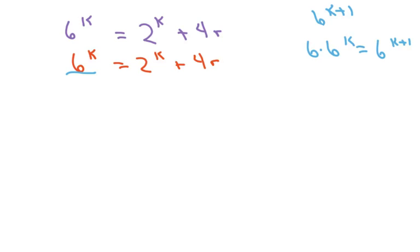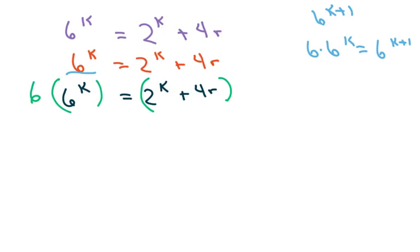So we're going to multiply both sides by 6, but instead of writing 6 on the right side, I'm going to write 2 plus 4 — you'll see why in a minute. There are little tricks in these proofs. We do have the left sides matching with 6^(k+1), which is what we wanted.